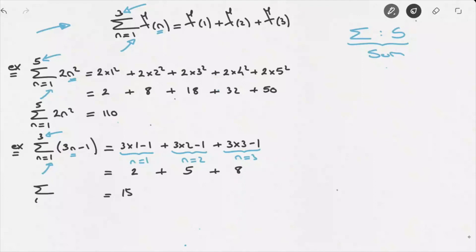And so that's how to interpret sigma notation. Remember, it is nothing more than a sum. We are adding the expression we see behind the sigma symbol for all the integer values between the initial value written at the bottom of the sigma symbol and the final value written at the top.